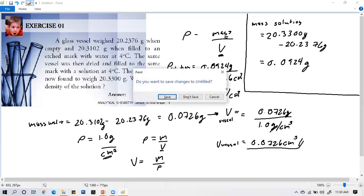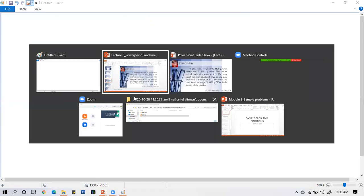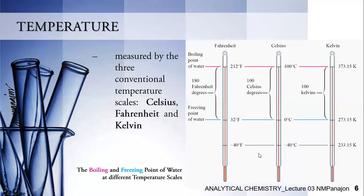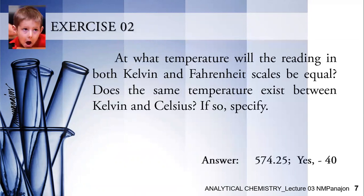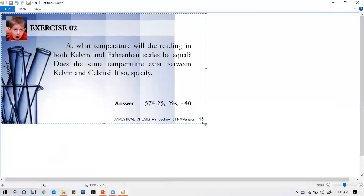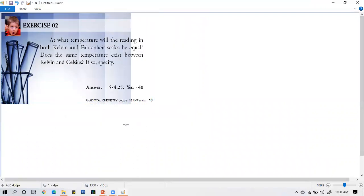Now let's go to the next problem, Exercise 2. This is a temperature problem. At what temperature will the reading in both Kelvin and Fahrenheit scales be equal? Does the same temperature exist for Kelvin and Celsius? If so, specify. The answer is yes, but how? Let's look at these scales. We need to find when Kelvin and Fahrenheit will be equal. Let's paste it to paint.